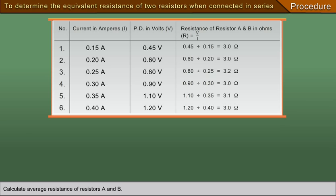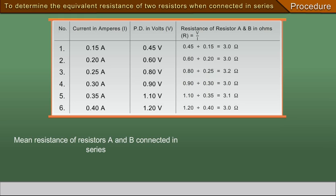Calculate average resistance of resistors A and B. Mean resistance of resistors A and B connected in series equals the sum of resistances in each case divided by the number of cases.